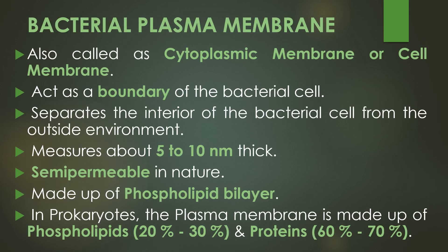The bacterial plasma membrane is also called as cytoplasmic membrane or cell membrane, and it acts as a boundary of the bacterial cell. It separates the interior of the bacterial cell from the outside environment, and it measures about 5 to 10 nanometers thick and is semi-permeable in nature.